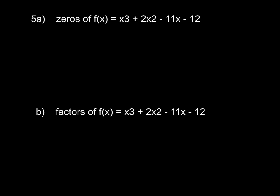Now if you turn the page and take a look at number five — this time they don't give us a picture. They say, what are the zeros of the polynomial function? And they give us the equation. So what we're going to do is graph this graphically — we're going to take out our calculator and graph this.